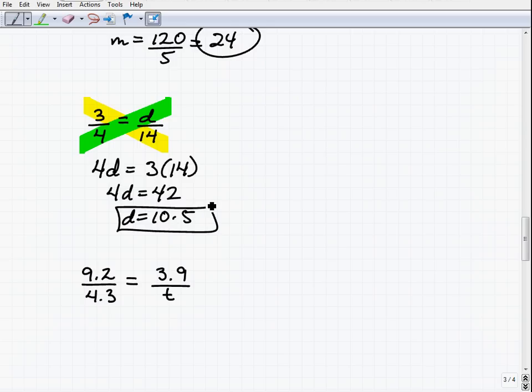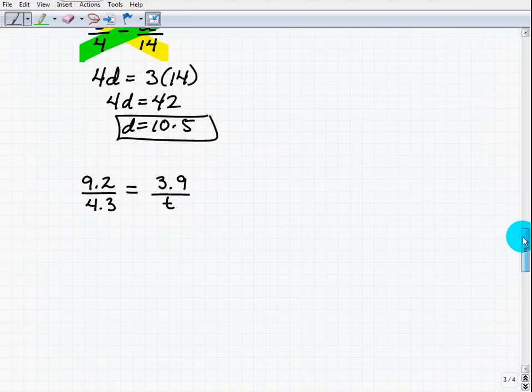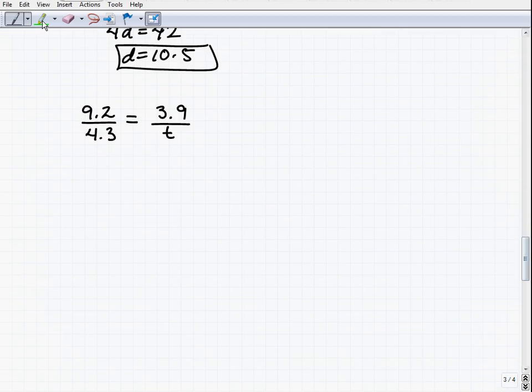Last problem. Once again, it's going to work the same way. 9.2 times t must equal 4.3 times 3.9 because these fractions form a proportion. So 9.2t, that's how we write that in algebra,